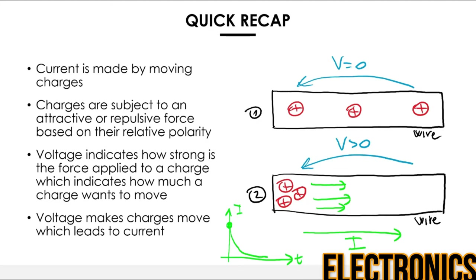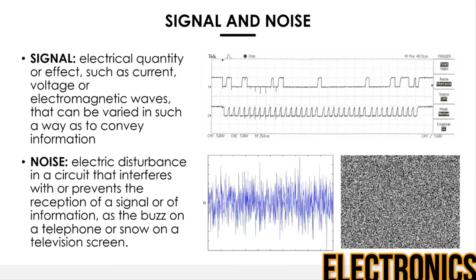In order to have a constant current across the wire, you need a device able to apply a constant voltage difference between the two terminals of the wire. That device is the battery. Now that current and voltage have been discussed, we can introduce the concept of signal and noise.